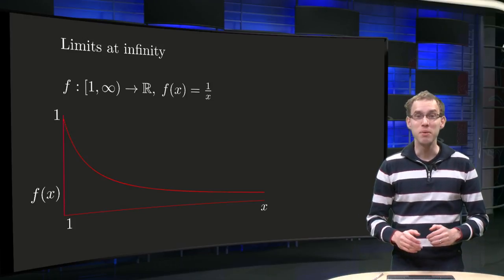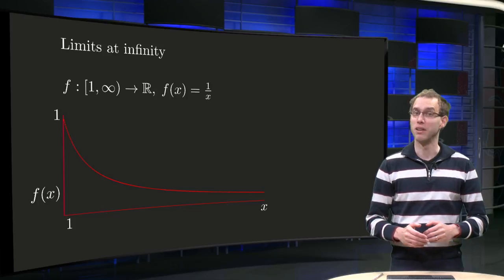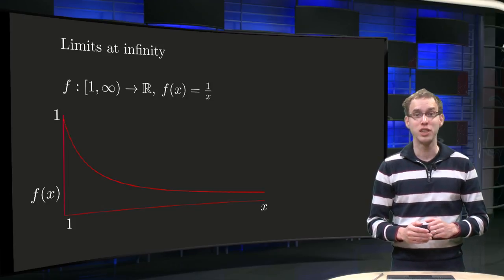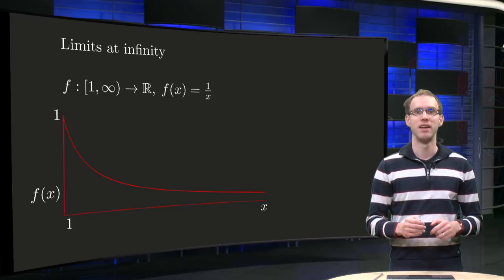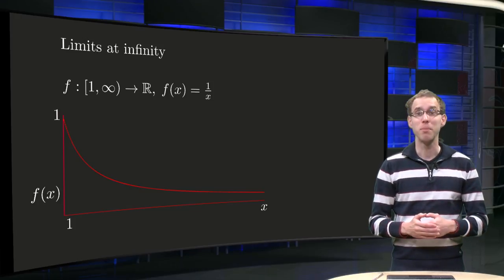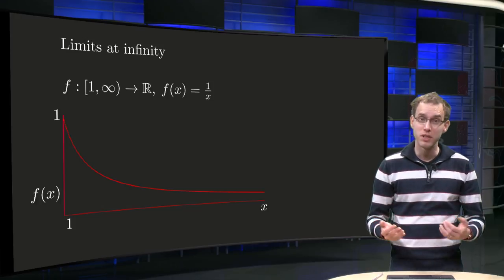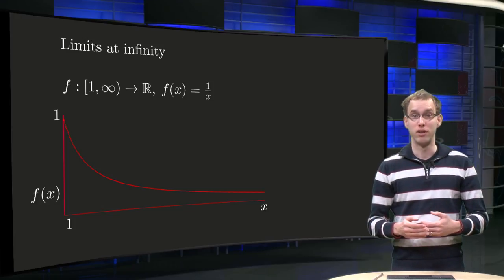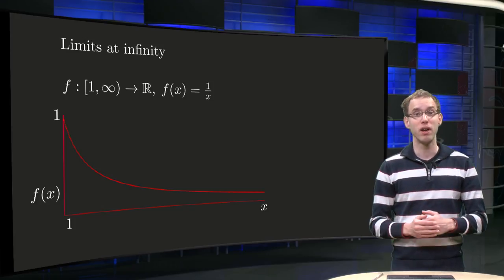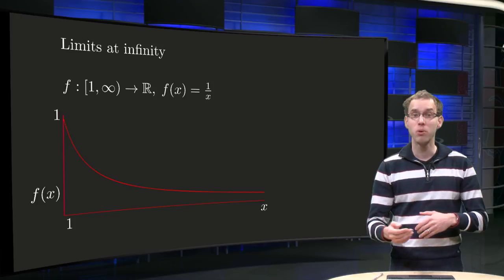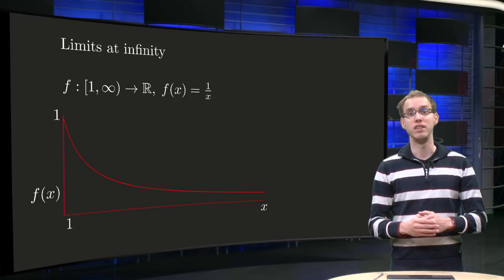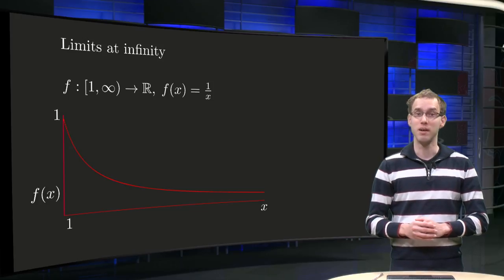We have seen that the limit of a function at the point A can be infinite — this means that the function becomes arbitrarily large if we get close to A. Now we wonder what happens if x becomes infinite. Well, we have a few possibilities: the function can become infinite as well, tend to some value, or neither of those. We will encounter all of these in this video about limits at infinity.